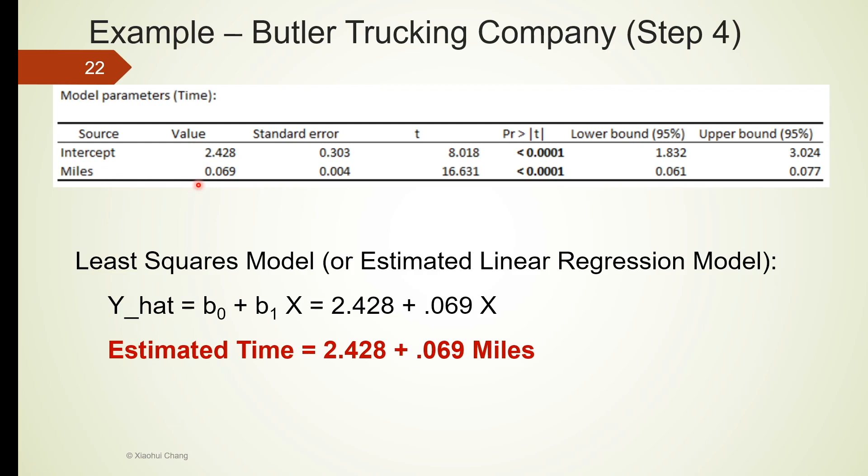Using Excel stat, we can see that the intercept beta 0 is estimated to be 2.428 and the slope beta 1 is estimated to be 0.069.